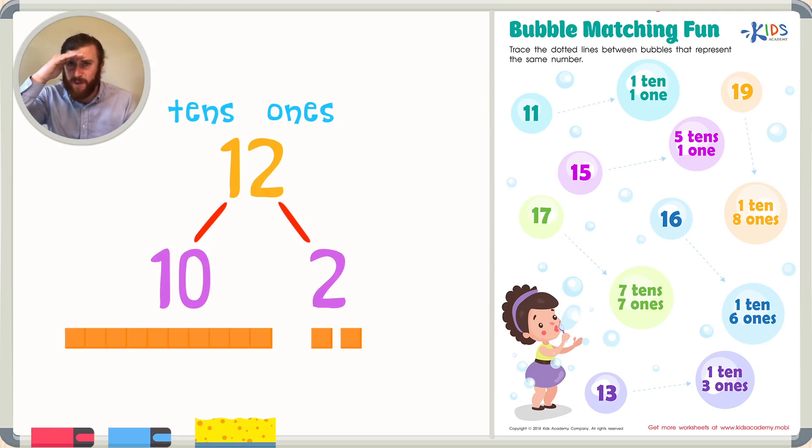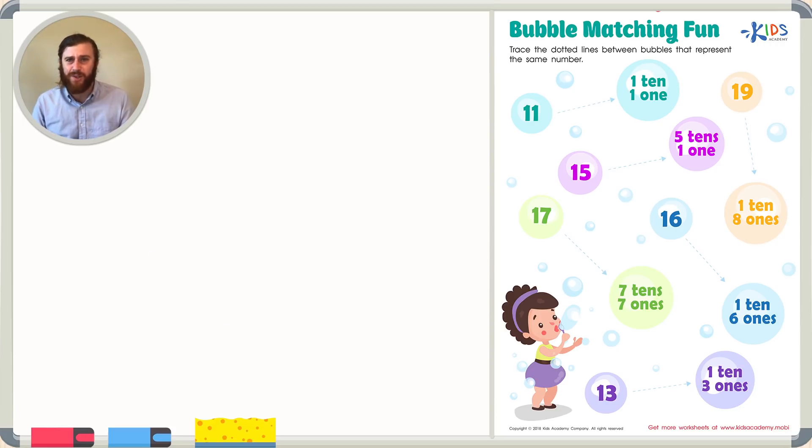So when I see the number 10, I know that 1 in the tens place really means 10, or 1 ten, not just 1. But the 2 in the ones place really just means 2, or 2 ones. With that information in mind, let's read the directions and get started right away.